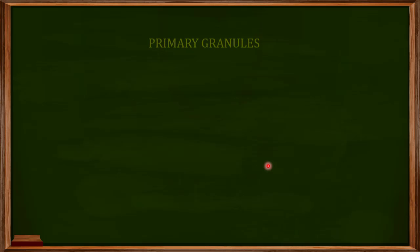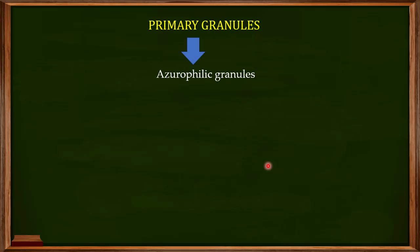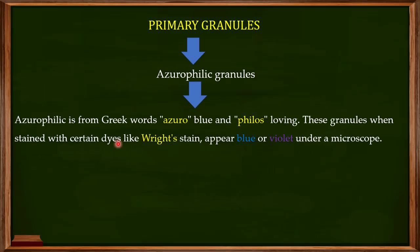We'll start our discussion with the primary granules, also known as azurophilic granules. The term 'azurophilic' comes from Greek: 'azuro' refers to blue, and 'philic' means loving. When you stain these primary granules with certain dyes like the Wright stain, the azurophilic granules appear blue or violet under a microscope — hence the name azurophilic granules.